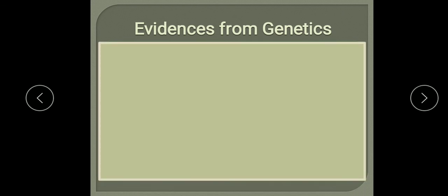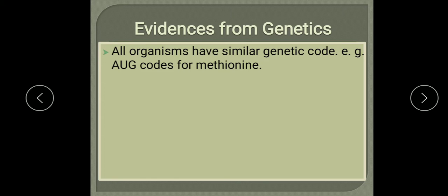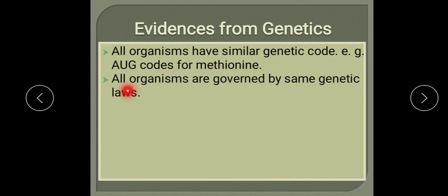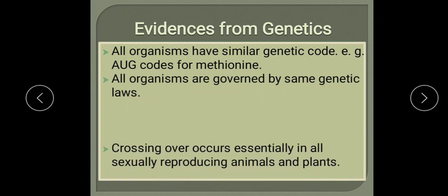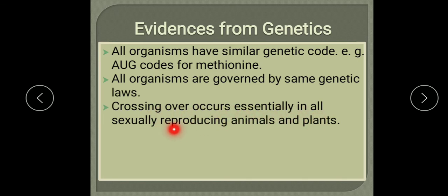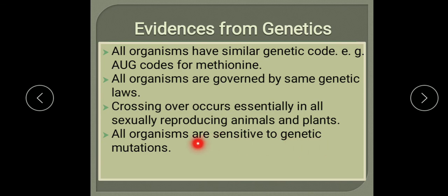Genetic studies of different organisms also provide strong clues in favour of evolution. All organisms have a similar genetic code — for example, AUG codes for methionine in all organisms. All organisms are governed by the same genetic laws. Crossing over occurs essentially in all sexually reproducing organisms, whether plants or animals. All organisms are sensitive to genetic mutations. Genetic studies explain how new species can be formed by a chance change in gene structure.